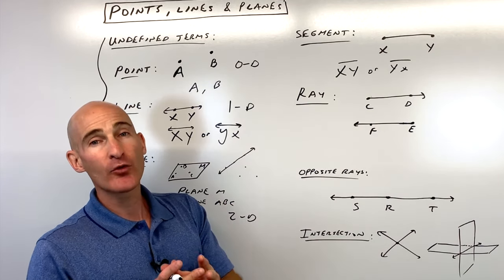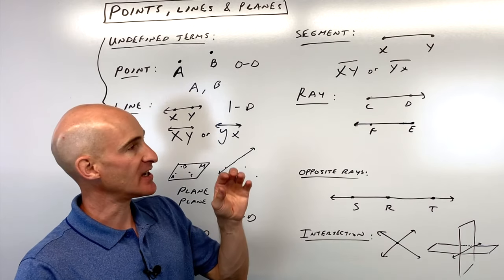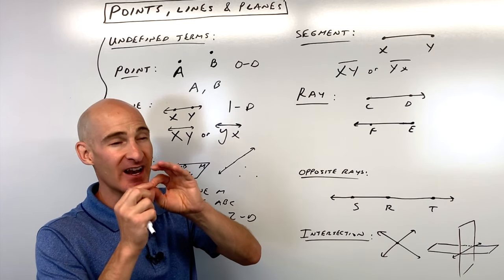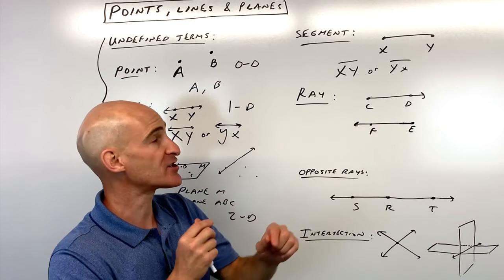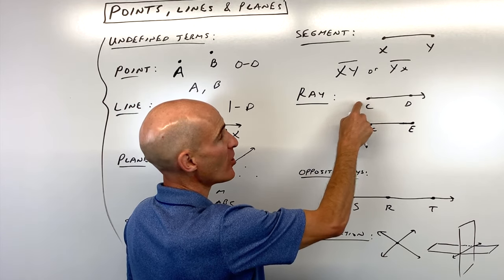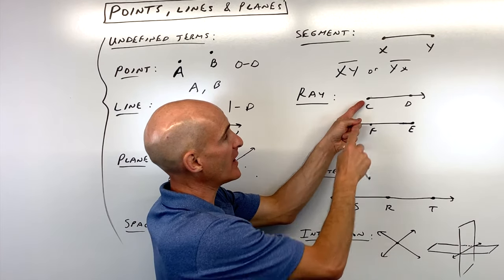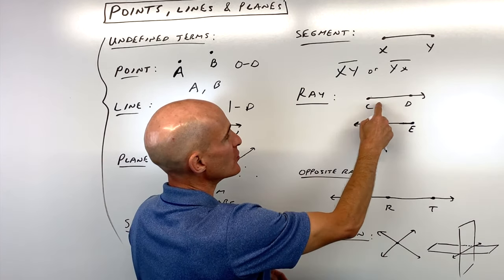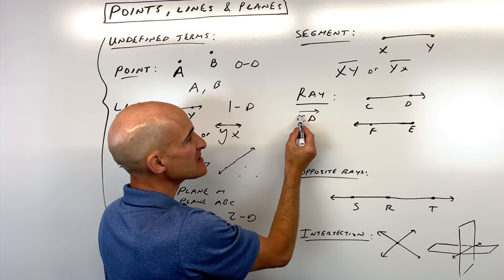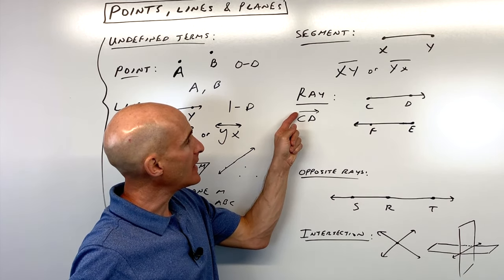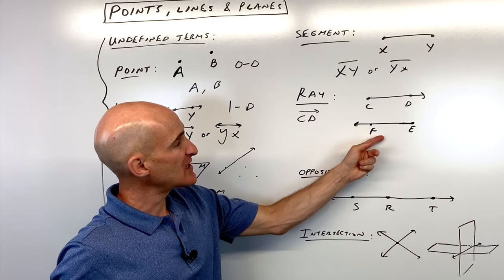With a ray, you think of a ray as like a ray of sunshine. It's like there's a photon at the sun and it's going out from the sun towards the earth. It just goes one direction. It has an endpoint. We call this an endpoint, but you can think of it as like a starting point and it just goes that one direction. So this is what we would call ray CD. And when you draw the symbol for a ray, you always want to draw it to the right.